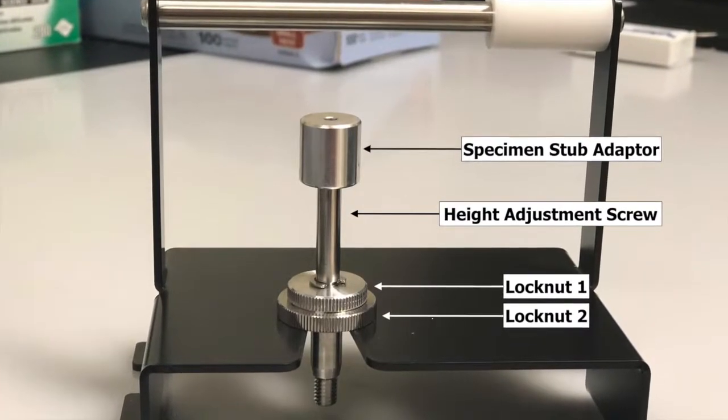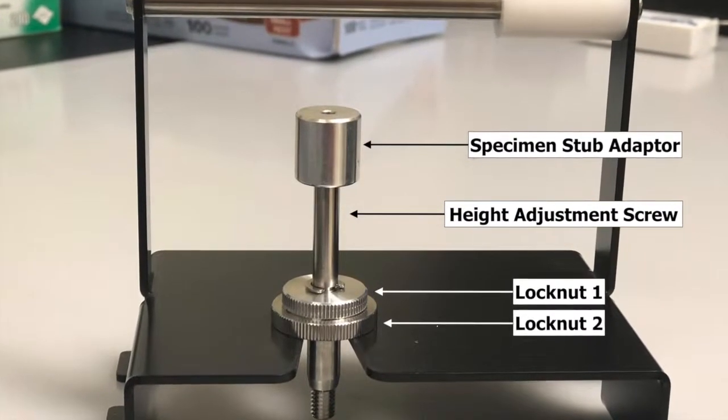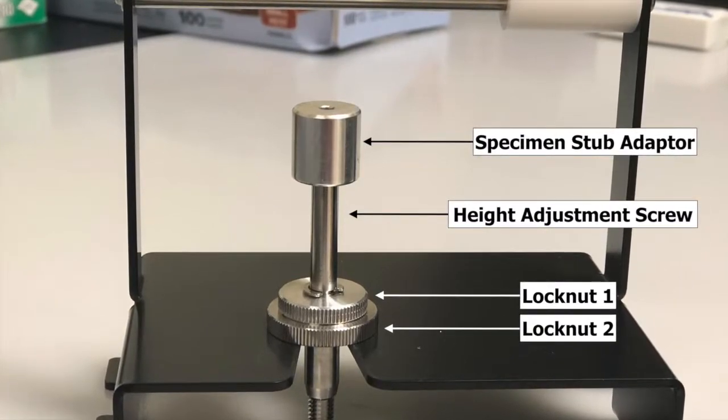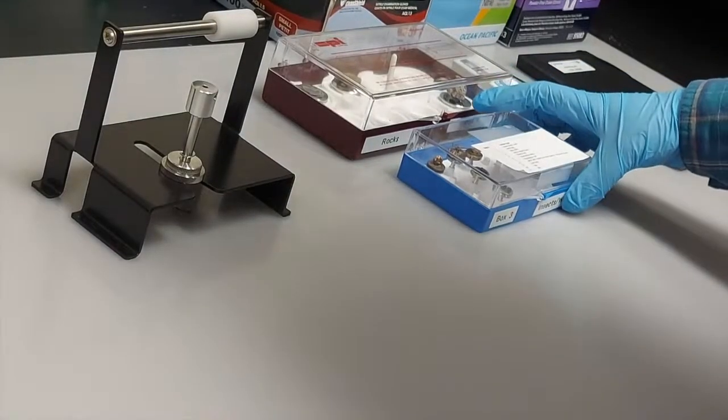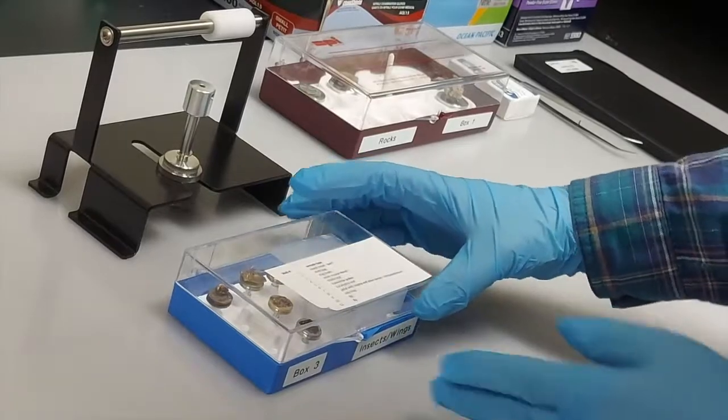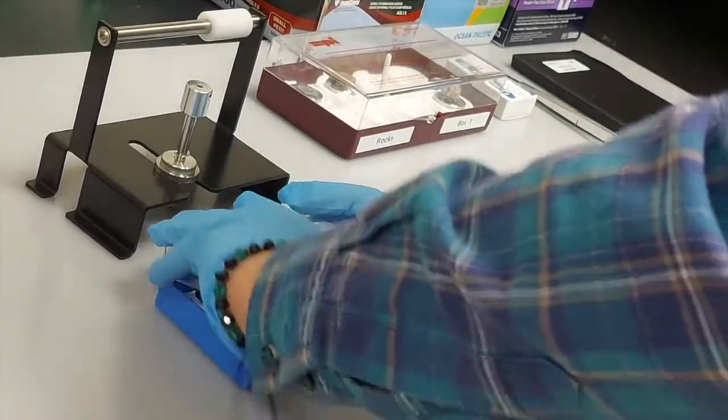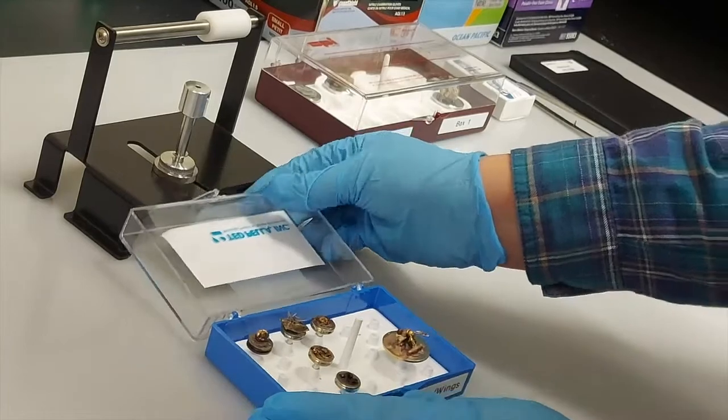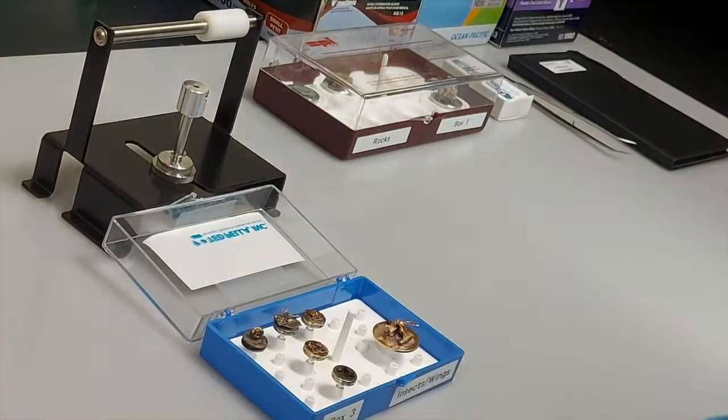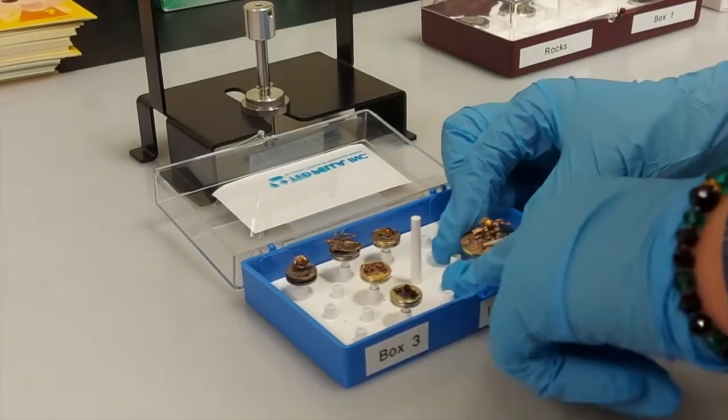Set up the sample holder apparatus as shown if not already done. Take the box of the sample you would like to observe and place it on the table. Take out the sample.